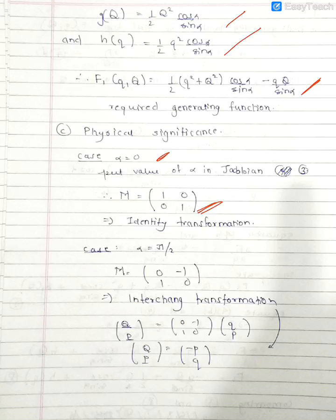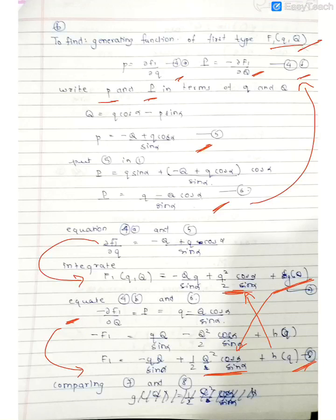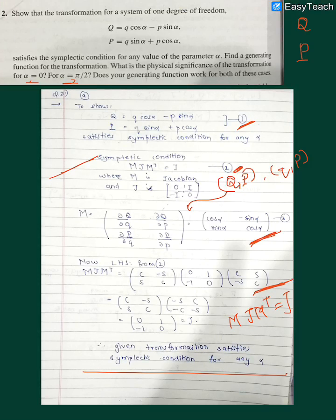This will produce exactly what the coordinates are. Small q and small p after transformation become capital Q and capital P. This can also be seen from equation 1. If I put alpha equals zero, capital Q is small q and capital P is small p. That's why it is said to be identity transformation.